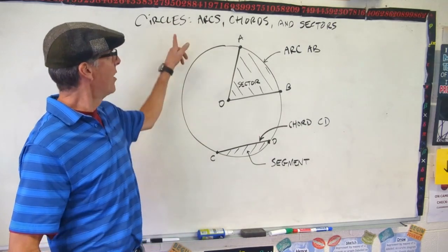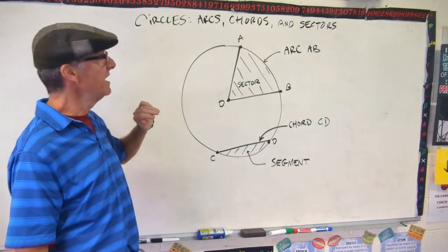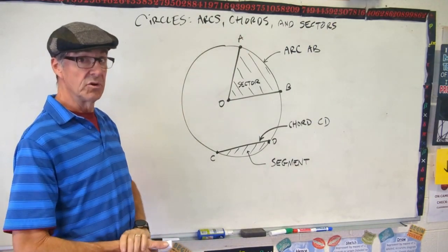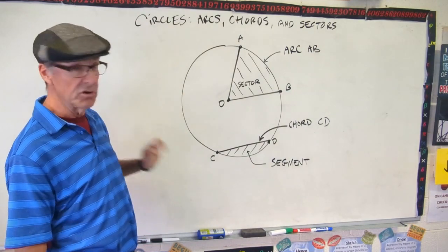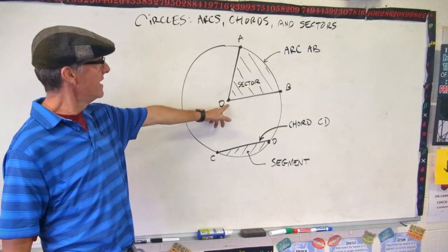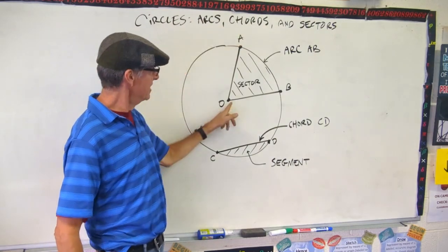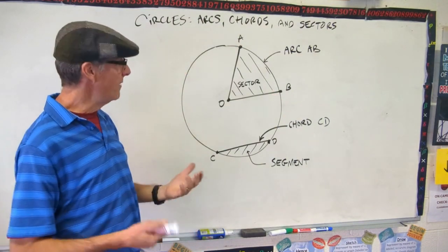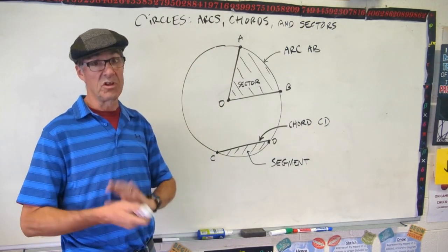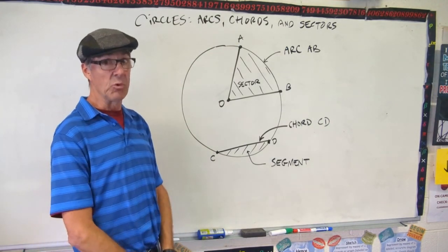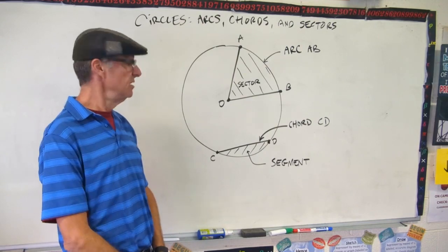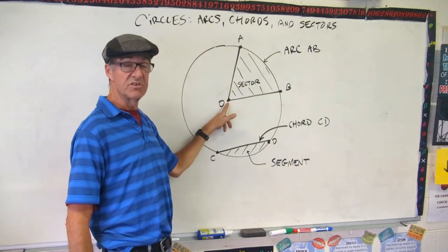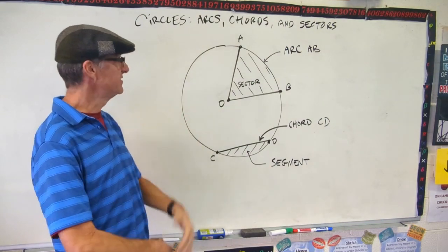Today's lesson covers parts of circles. We're going to deal with arcs, chords, sectors, and segments. Here's my circle, center O, and I've got some radii going from O to A and O to B. Remember, all your radii are equal in a circle. In fact, the definition of a circle is all points equidistant from a center point. So this circle O is all the points that are the same distance away from O, and that makes our circle.